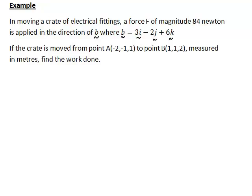So here we'll look at an example where it already is in newtons and metres and focus on how to find the work done using vector methods. We're looking at moving a crate of electrical fittings, where we're told that the force F has magnitude 84 newtons and is applied in a direction of a vector B, where B is 3i minus 2j plus 6k.